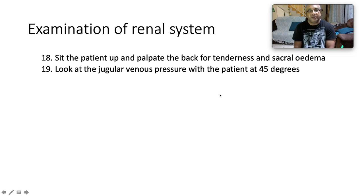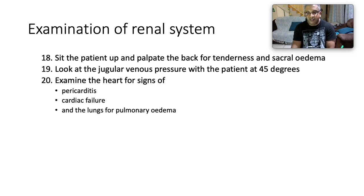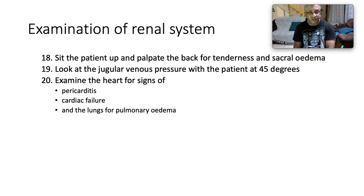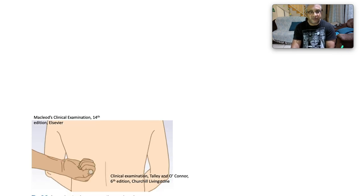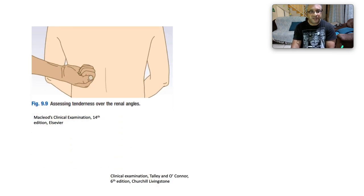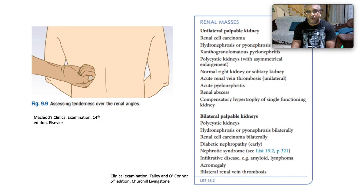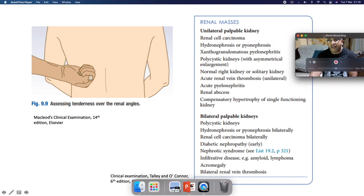Check for any sacral oedema. Look at the jugular venous pressure with the patient at 45 degrees — if elevated, it may speak to fluid volume overload. Examine the heart for signs of pericarditis occurring in uraemia, cardiac failure, and auscultate the posterior lung bases for pulmonary oedema. This is how we assess for renal angle tenderness.